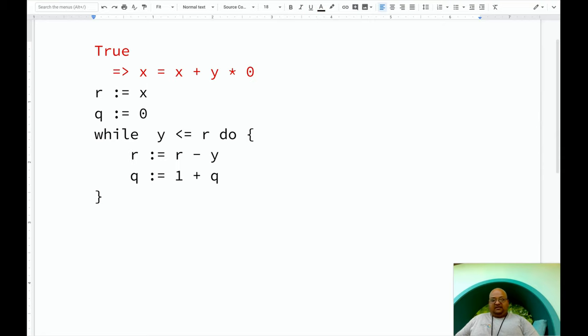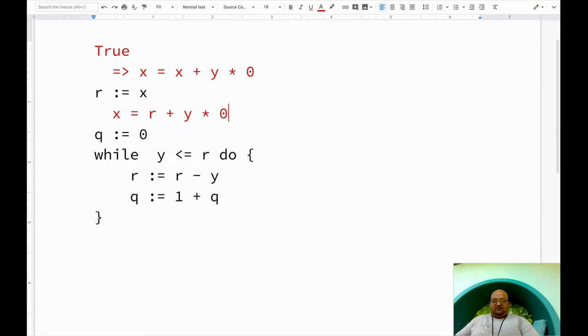Now let's look at this assignment statement, R colon equals to x. Now this whole expression, x equals x plus y times 0, can now be a precondition for the statement R colon equals to x. Now using the axiom of assignment, we can write down a post condition for this assignment statement. And the way we write that post condition is by substituting R for x, which gives us x equals R plus y times 0. Now this is the precondition for the next expression, which is q equals 0. We apply the axiom of assignment one more time to the precondition and that should give us x equals R plus y times q.